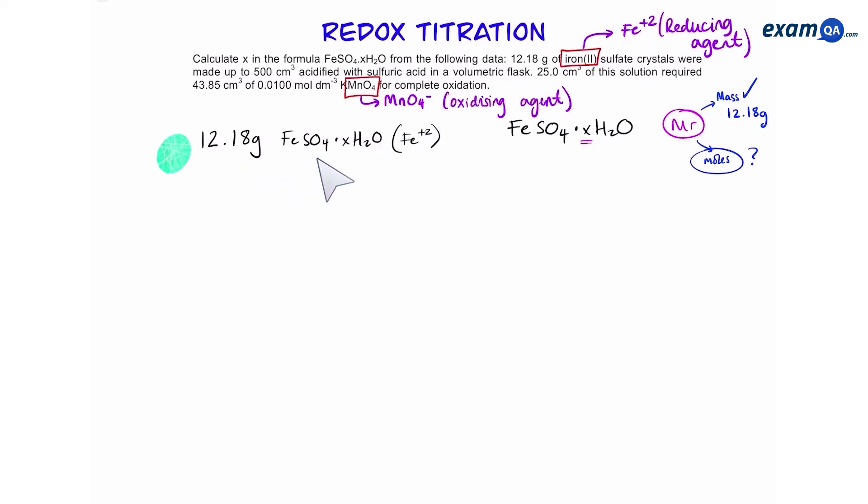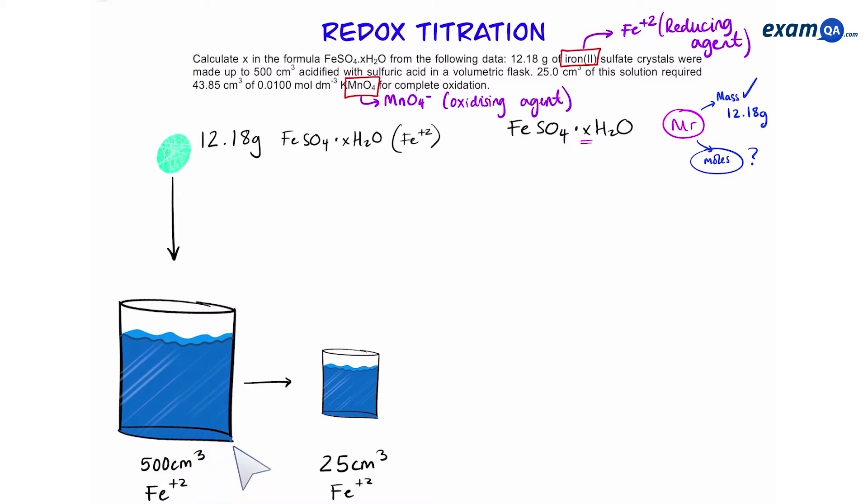12.18 grams of iron sulfate is put into a beaker, made up to 500 centimeters cubed, and then a small 25 centimeter cubed sample is titrated with manganate. 43.85 centimeters cubed of 0.01 mole per diem cubed manganate is required.